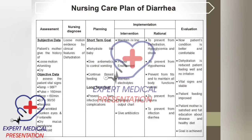To prevent anorexia and to prevent infection and diarrhea. Evaluation: patient's condition is now better and comfortable, dehydration is reduced, patient feeling well with no irritation, vital signs are stable, patient feeding improved, mother is satisfied, and full education given about disease and healthy diet. Treatment goal is achieved.